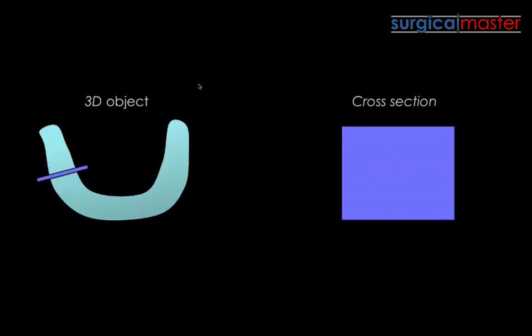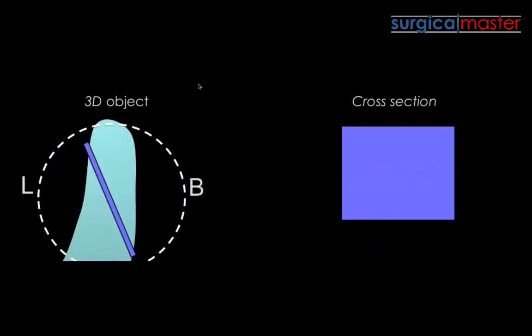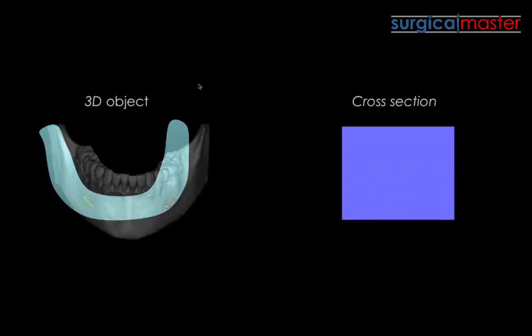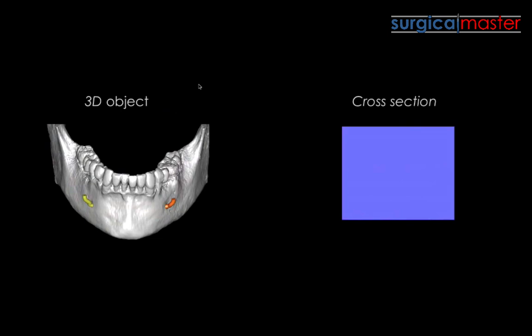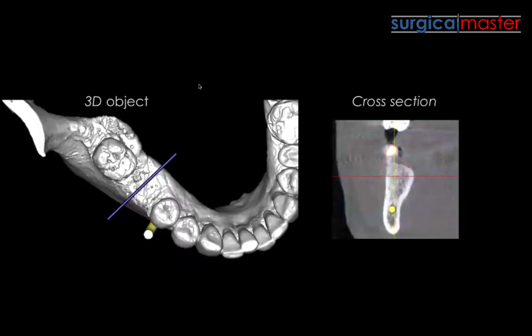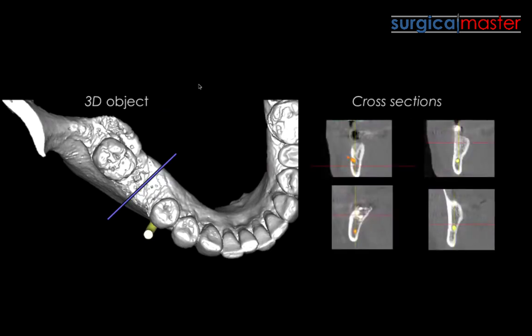Let's say it's a cross section from buccal to lingual in the mandible. This cross section doesn't have to be aligned buccal-lingual — it can be diagonal or mesiodistal. If you don't know how the cross section is oriented, you will not know what you're looking at. A cross section through the ridge will show the alveolar crest, the cortical plates, the cancellous bone, and a cross section of the inferior alveolar nerve.